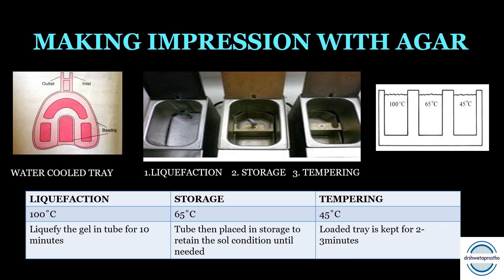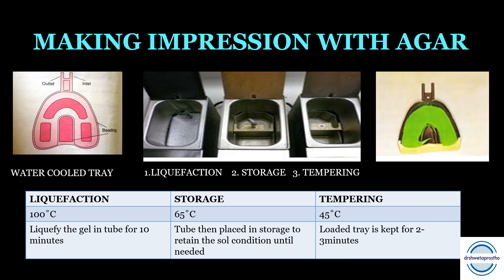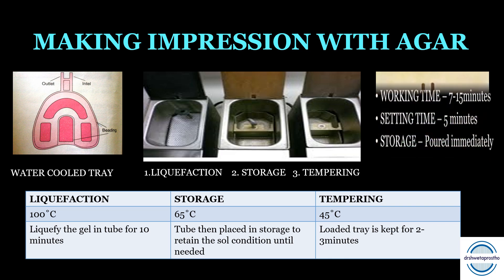For making the impression, first liquefy the gel in the tube by keeping it in the liquefaction chamber for 10 minutes. The tube is then placed in the storage bath at 65°C to retain the sol condition until needed. When the patient comes, load the impression tray with the hydrocolloid sol and cover it with a gauze piece. The loaded tray is kept in the tempering section for 2 to 3 minutes so that it is tolerated by the oral tissues. The working time is 7 to 15 minutes and the setting time is about 5 minutes. Storage of the agar impression is not recommended — it should be poured immediately.